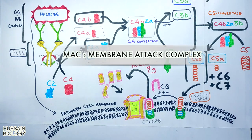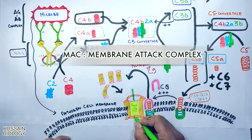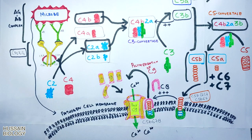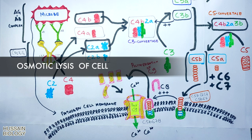Through this MAC there is influx of calcium ions and many other electrolytes into the target cell, which eventually brings about the bursting of cell through osmotic lysis. This is how the complement system works with the classical pathway.